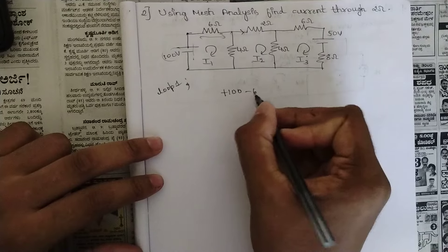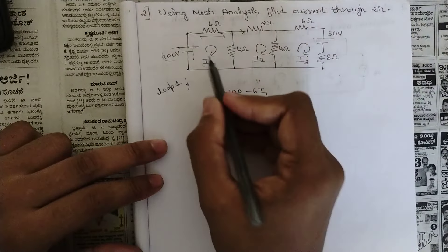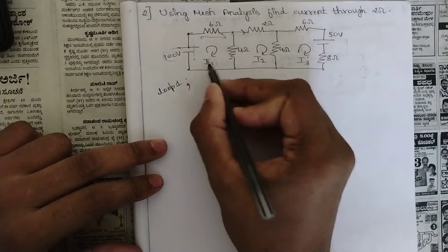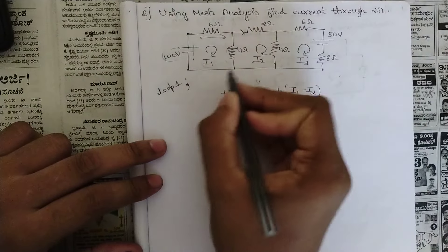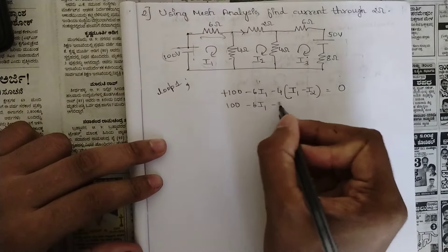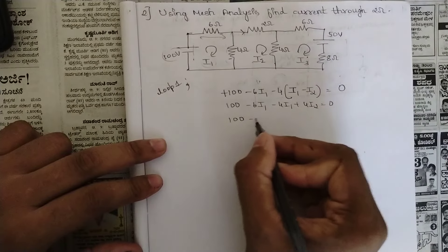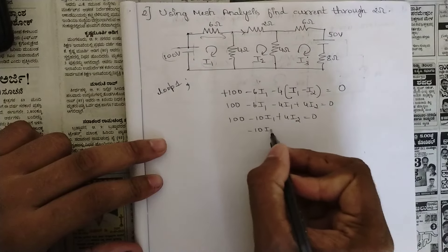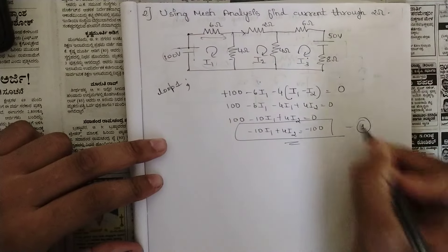Apply KVL on loop 1. Starting from here: outward sign is plus for the voltage source, so +100. Then −6·I1 (outward sign minus for 6 ohm). Then for the 4 ohm resistor between loop 1 and loop 2: −4·(I1 − I2). Setting equal to zero and simplifying: 100 − 6I1 − 4I1 + 4I2 = 0, giving −10I1 + 4I2 = −100. Name this equation 1.